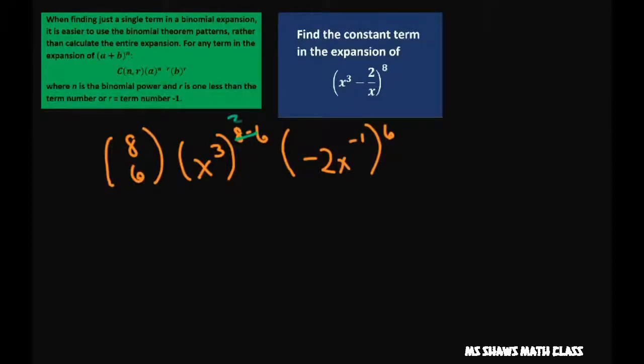This is just 2. So you're going to get 8 choose 6 is 28. 3 times 2 is 6, so this is going to be x to the 6th. Negative 2 to the 6th is 64. And then we have negative 1 times 6 is negative 6.